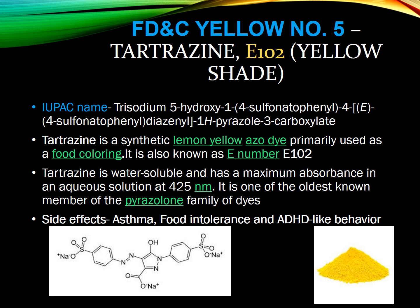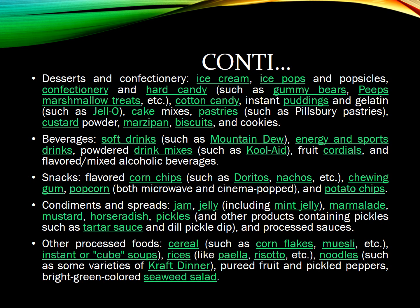FD&C Yellow No. 5, Tartrazine, has the E number E102 and gives a lemon yellow shade. It is grouped under azo dyes. The maximum absorbance can be measured at 425 nm. It is the oldest known member of the pyrazolone family of dyes. Side effects from higher concentration consumption include asthma, food intolerance, and behavioral disorders in children. It is used in desserts and confectionery, ice cream, cotton candy, pastries, beverages, snack products, condiments and spreads, and processed foods like cornflakes, muesli, and noodles.